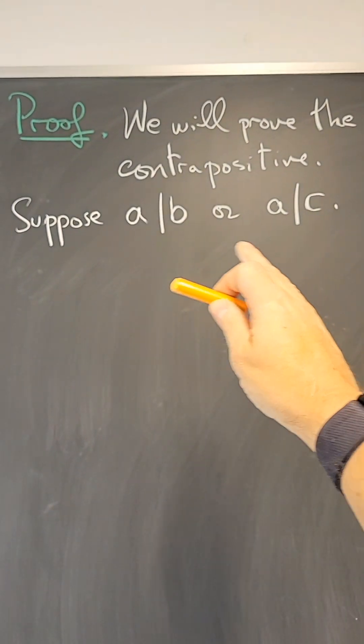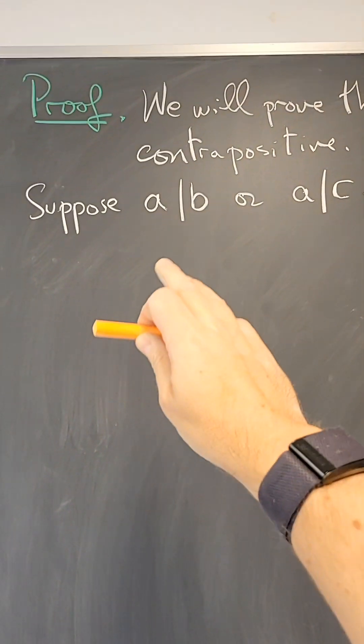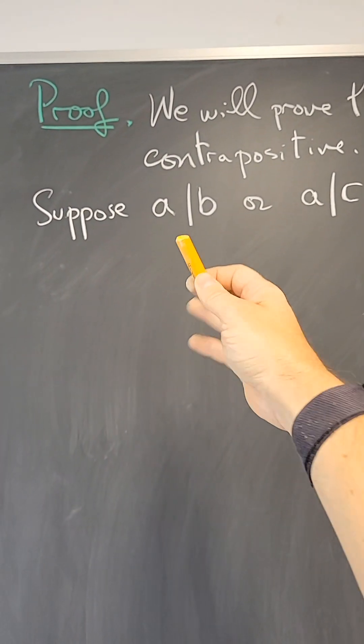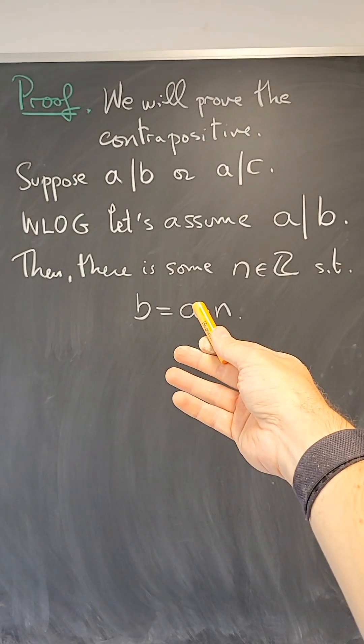the two proofs when A divides B or when A divides C are exactly the same, so without loss of generality we assume that A divides B.